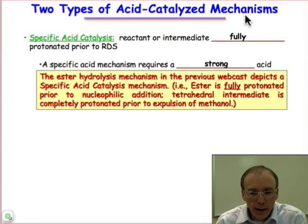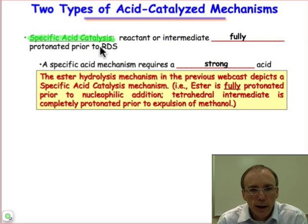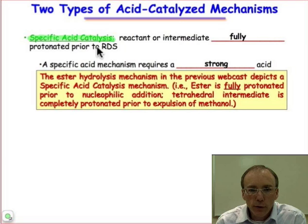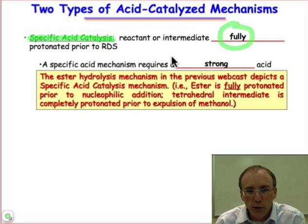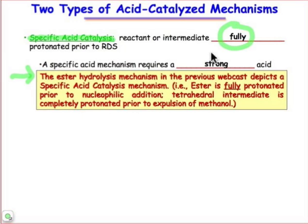Here we're going to be looking at acid-catalyzed reactions and we're going to be making a distinction between what we call specific acid-catalyzed reactions — that's what you're used to thinking about, where protons are fully transferred to reactants or intermediates prior to the rate-determining step. This is what we learned about when we talked about ester hydrolysis mechanism. In order to accomplish specific acid-catalyzed reaction mechanisms, we require a strong acid in order to fully transfer that proton.